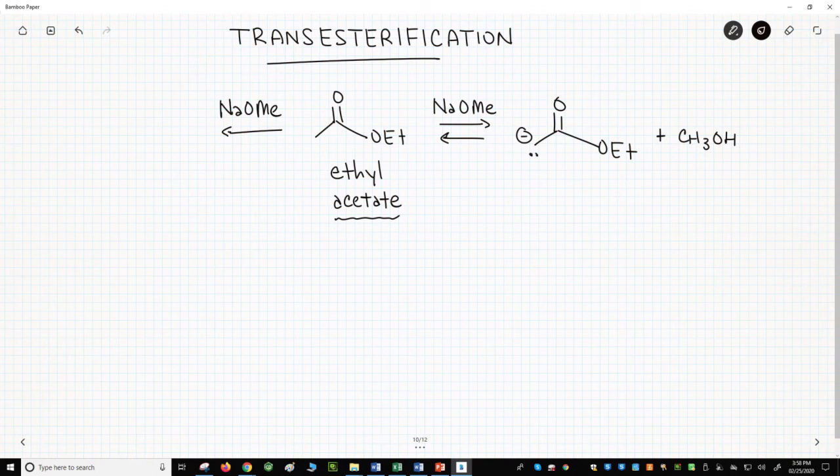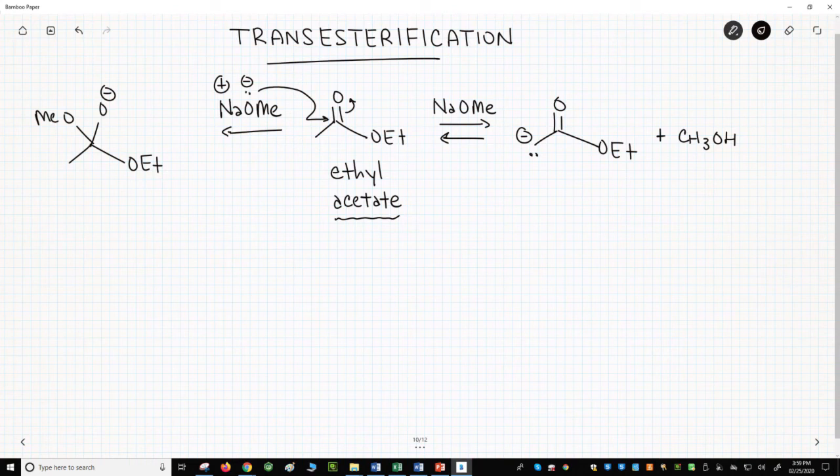Well, we know that alkoxides are not just basic. They are also nucleophilic. We could attack the ester carbonyl that would lead to a tetrahedral intermediate. From a tetrahedral intermediate, we look for a leaving group.